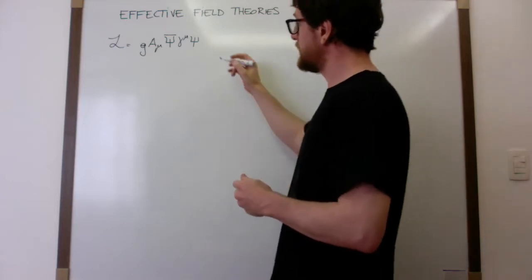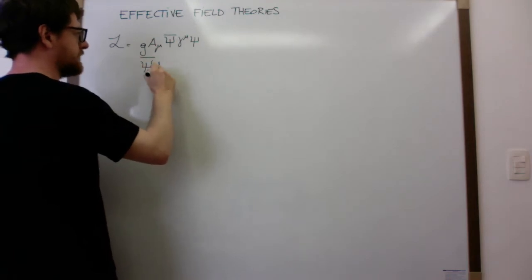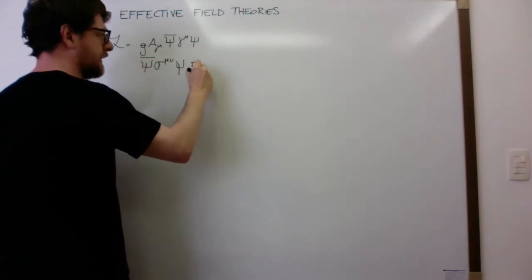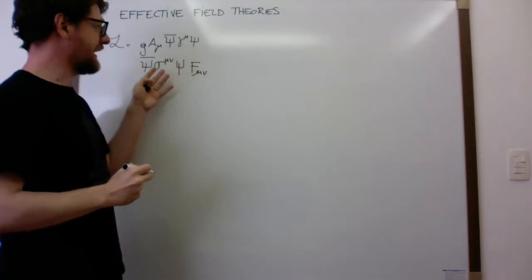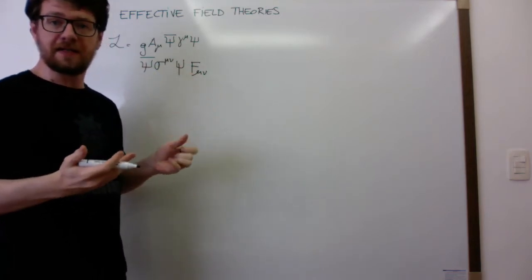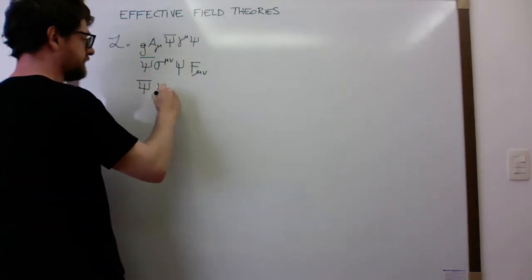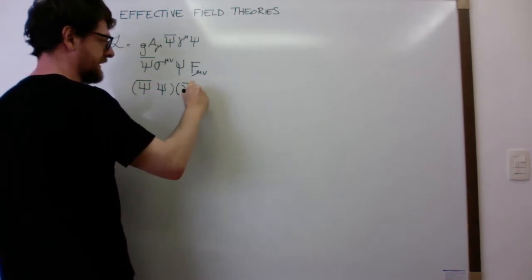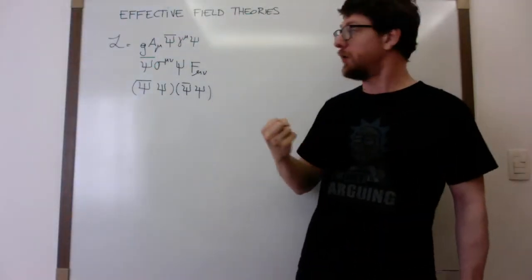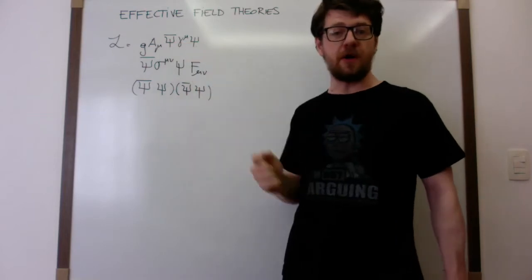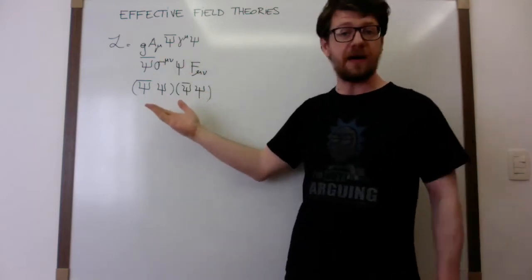For instance, why not use an interaction like psi-bar sigma-mu-nu psi F-mu-nu? This is completely invariant under gauge transformation and Lorentz transformation, so it is a perfectly valid interaction. Or why not write something like psi-bar psi multiplied by psi-bar psi? This is symptomatic of an intrinsic problem we have in quantum field theory.